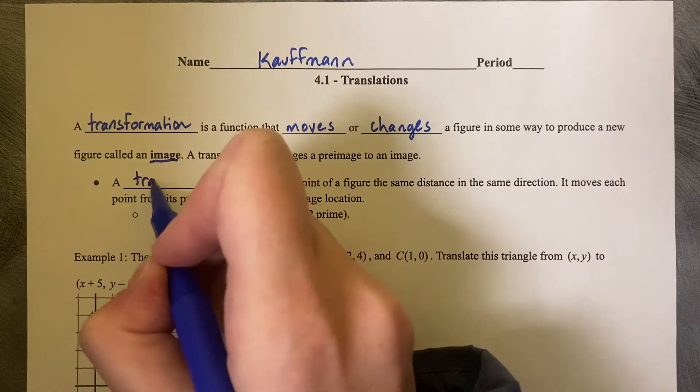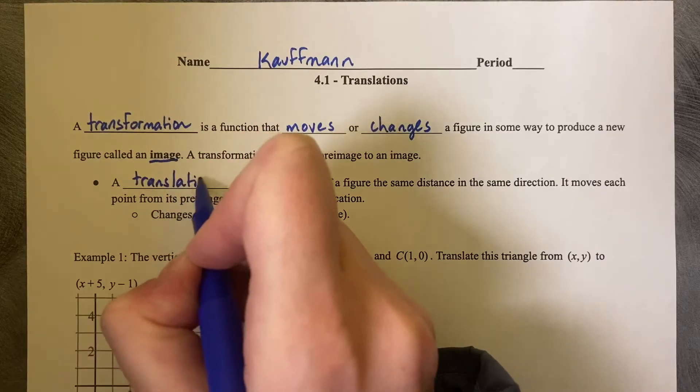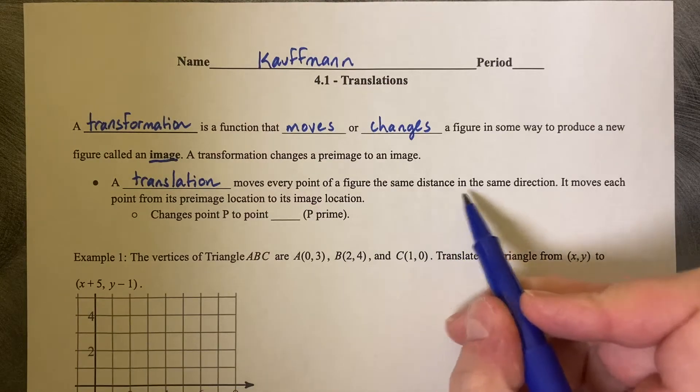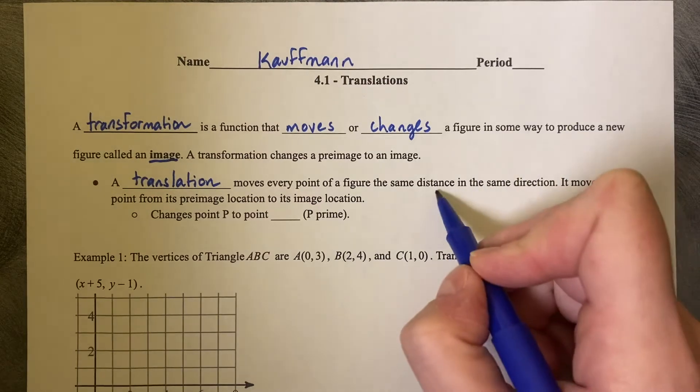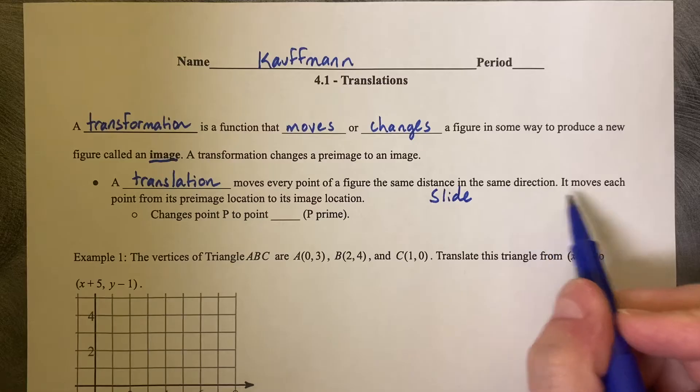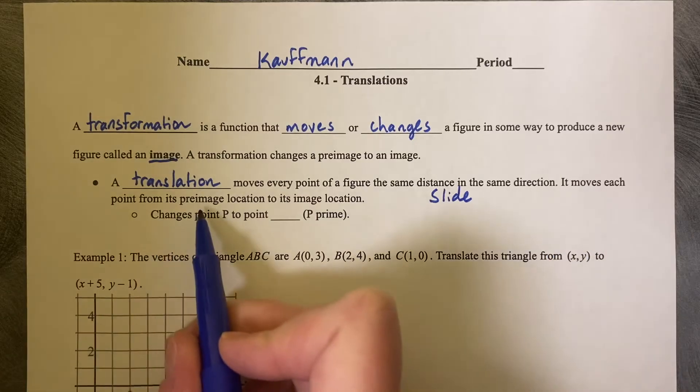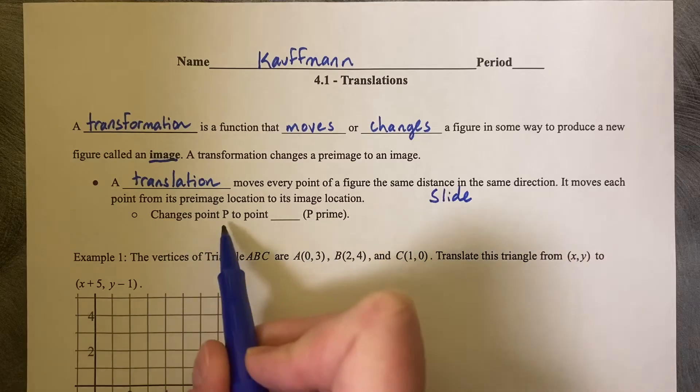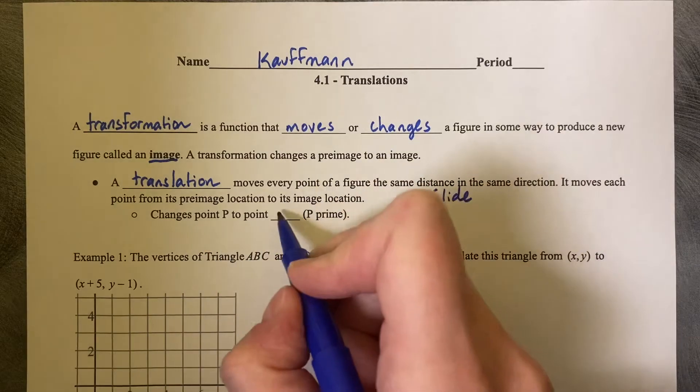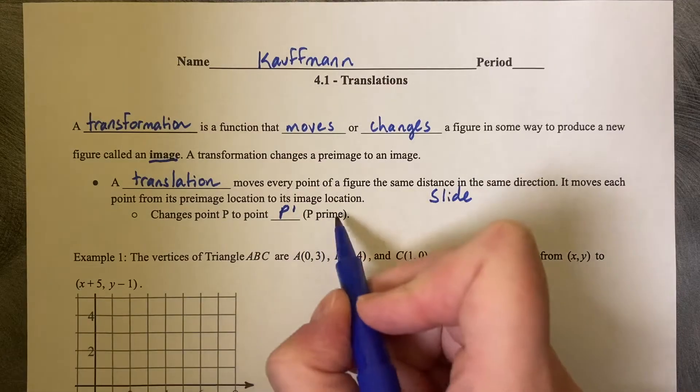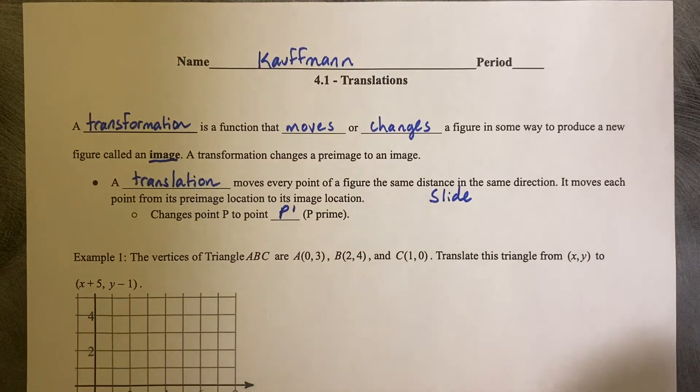A translation moves every point of a figure the same distance in the same direction, or in other words, a slide. You're not making it bigger or smaller, you're just moving it in the same distance, same direction. It moves each point from its pre-image location to its image location, changing point P to point P prime. Use a small apostrophe to denote that you're looking at your prime or your image.